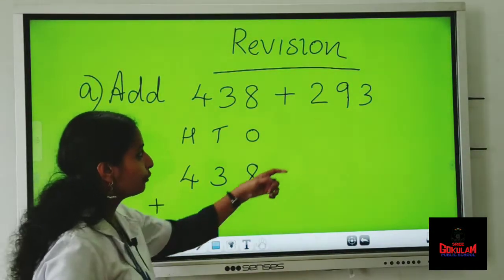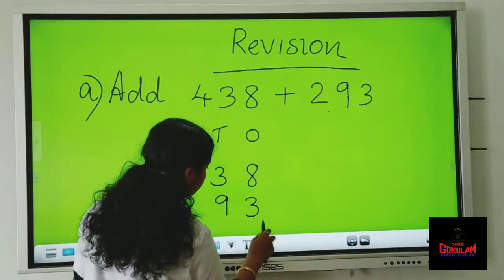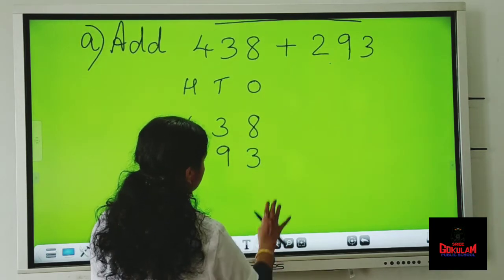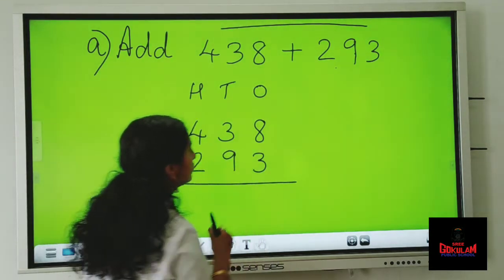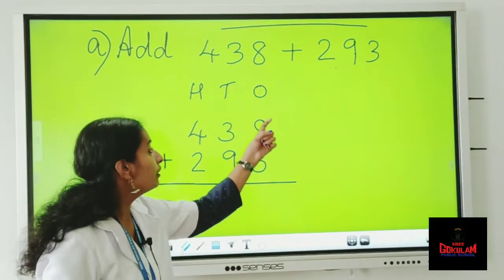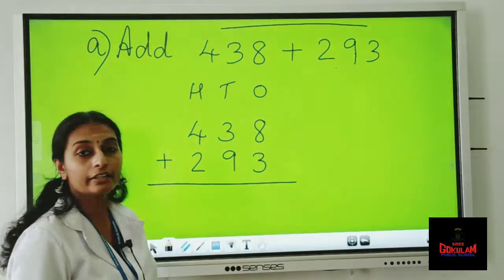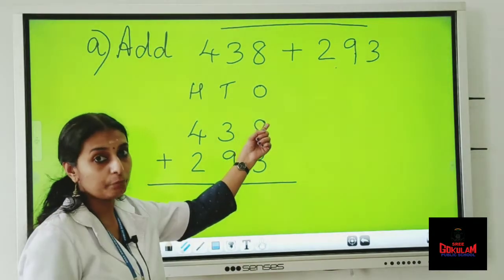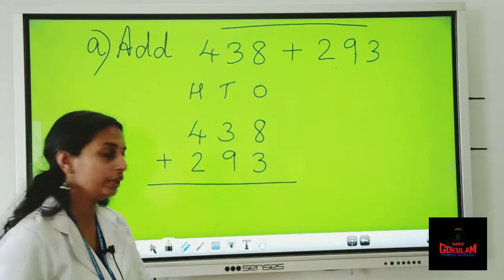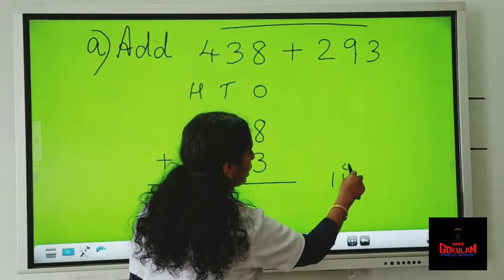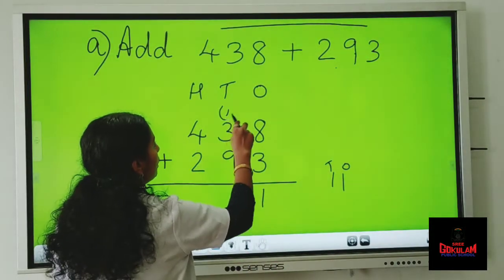And we have to write the next number below this: two, nine and three. So we have to add the ones place first. Here we have eight and three. So how will we add eight and three? Keep eight in the mind, three on the fingers. After eight: nine, ten, eleven. This is the ones place and this is the tens place. So we put one here and one is the carryover.